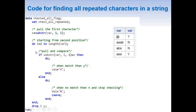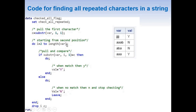The loop then increments to i=3, and the IF statement becomes IF SUBSTR(var, 3, 1) = c. We extract the third character and compare it with the first — they are the same, so we assign Y again, overwriting the previous value. Finally the loop goes to i=4: IF SUBSTR(var, 4, 1) = c. The fourth character also matches, so Y is assigned again. The loop then ends as its maximum value of 4 is reached, and the final value is Y.